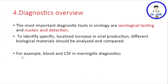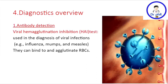Now let's talk about diagnosis. The most important diagnostic tools in virology are serological testing and nucleic acid detection, which help identify specific localized increases in viral production. Different biological materials such as blood or cerebrospinal fluid in cases of meningitis are analyzed and compared. For antibody detection, a very important test is the hemagglutination inhibition test, used in the diagnosis of influenza, mumps, and measles.